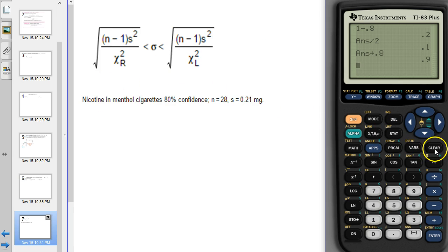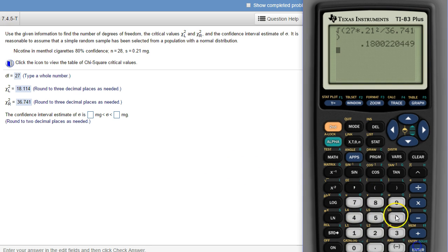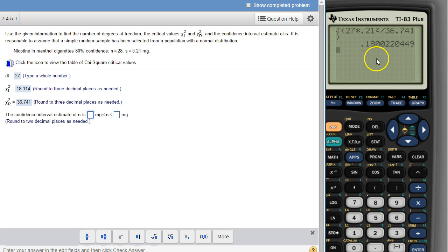So there's our formula to get the lower number. The first number is the square root of n minus 1. N minus 1 is the degrees of freedom, so 28 minus 1 is 27. S squared is that 21.21 squared, so times 0.21 squared, and that's divided by chi-square right, which was this 36.741. So there's my lower number, to two places just 0.18.